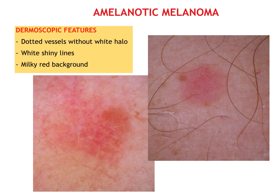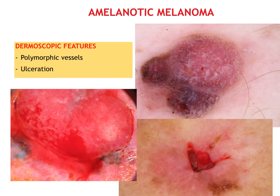Amelanotic melanoma is the worst nightmare for all dermoscopists and should always be kept in mind when facing a pink lesion. Useful dermoscopic clues for amelanotic melanoma are dotted vessels without halo and white shiny lines on a milky red background. On the other hand, polymorphic vessels and ulcerations are detectable in thick nodular melanoma.